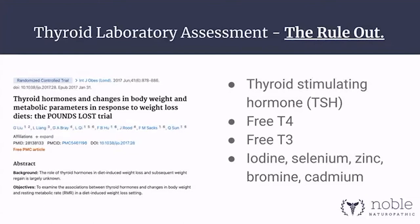What we know from the POUNDS LOST trial is that the actual thyroid hormones — free T3 and free T4 — when those are at the top of the range, clients are able to lose weight much easier. So sometimes it's worth doing these extra assessments to see what's in free circulation. A TSH less than 3 is usually very reflective of normal T4 and T3 levels.